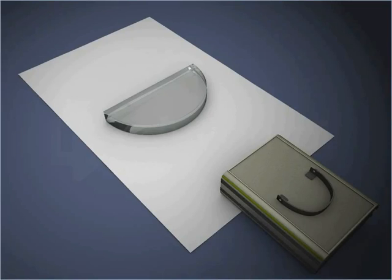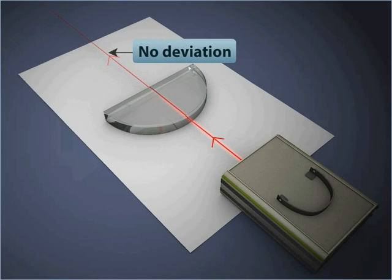In a dark room, place the block at the center of the sheet. Now direct a narrow laser beam normally towards the curved surface of the block. You will observe that the light ray passes through the block without any deviation.